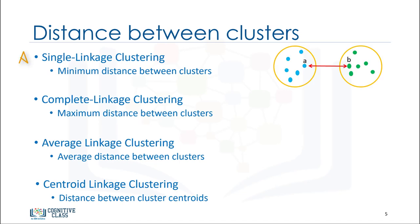The first one is called single linkage clustering. Single linkage is defined as the shortest distance between two points in each cluster, such as point A and B.